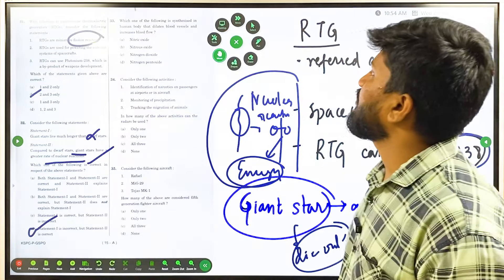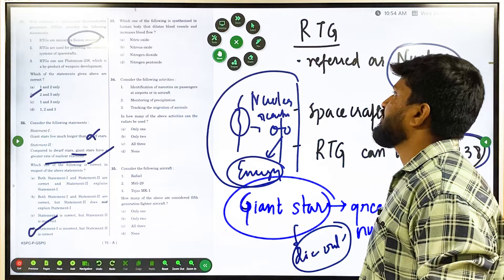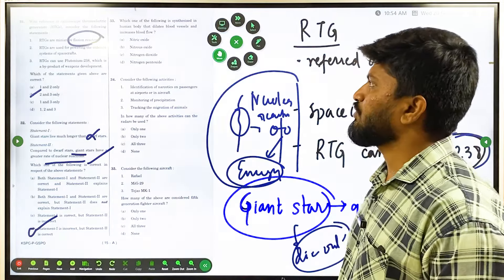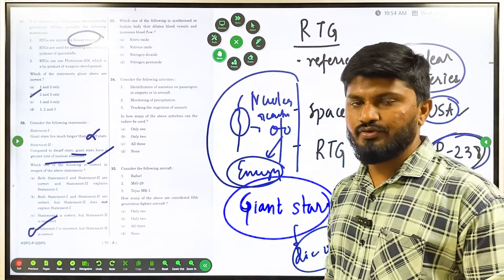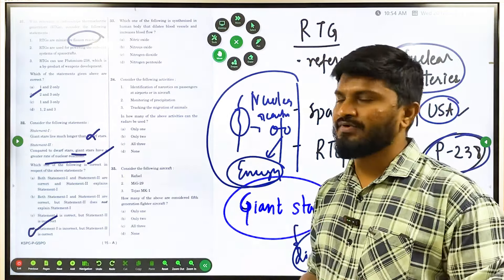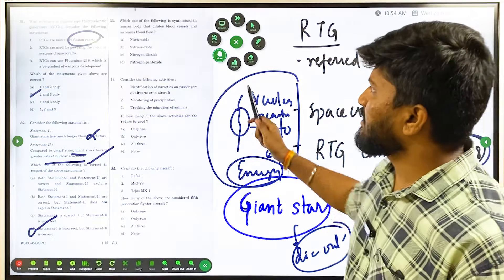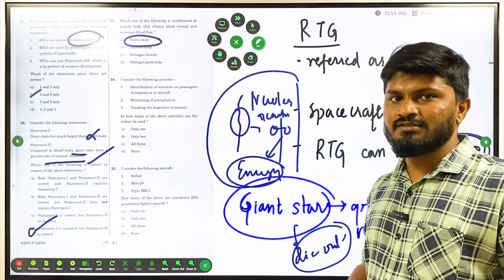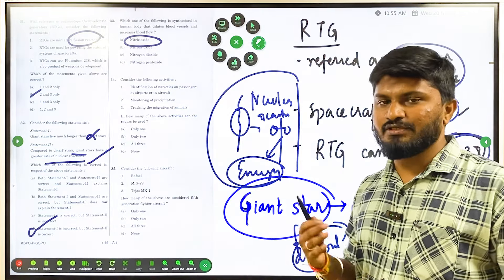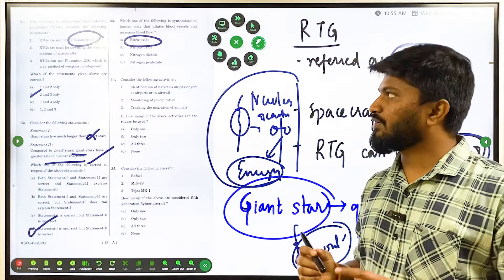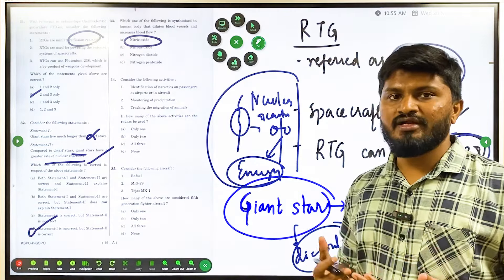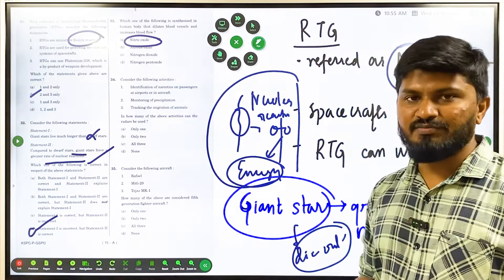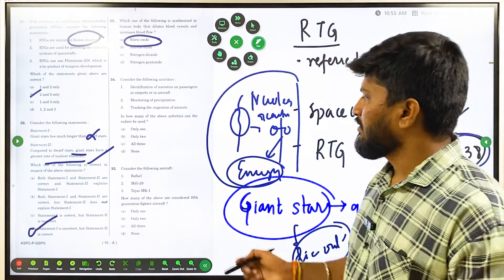Question 33 asks which substance synthesized in the human body dilates blood vessels and increases blood flow. If you have a medical background you would know this easily. The correct answer is nitric oxide — a chemical essential for well-being. It helps in blood flow and circulation of oxygen. Higher nitric oxide levels mean a healthier body and better metabolism; lower levels lead to negative health implications.